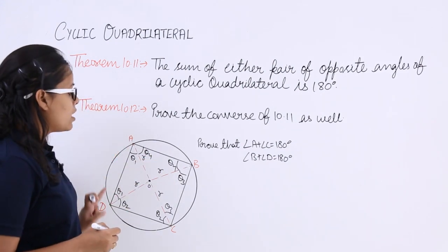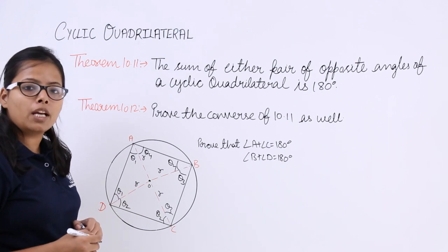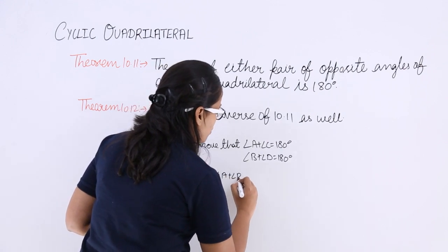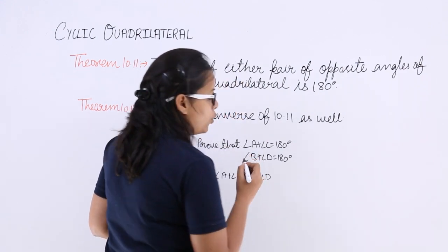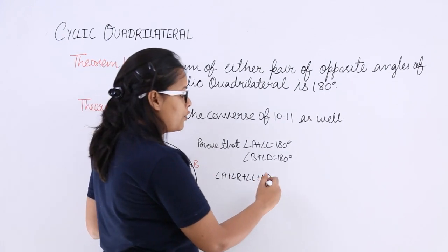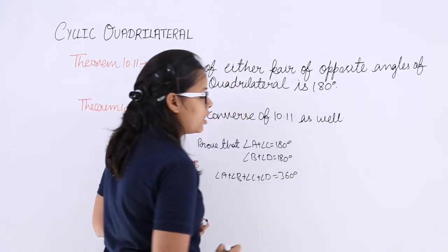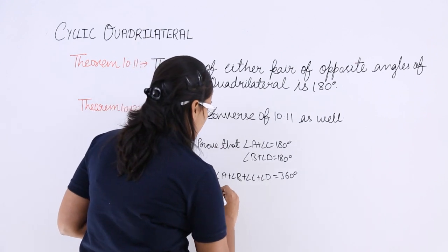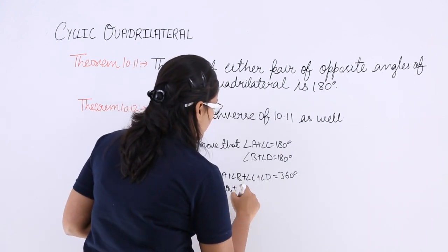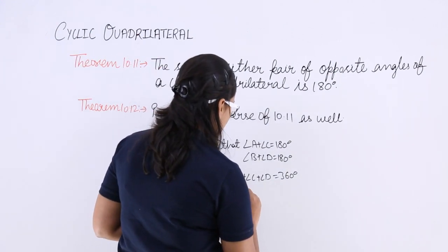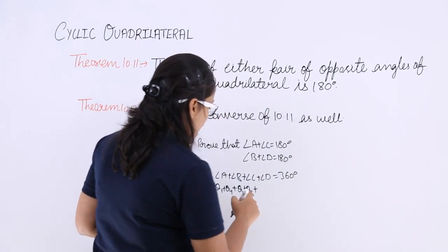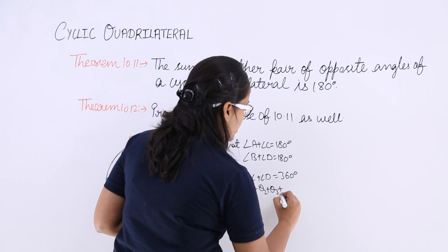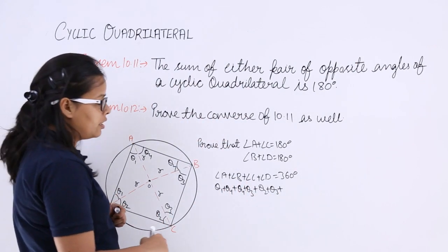Now, the sum of all the angles of this quadrilateral is equal to 360 degrees — you are already familiar with the quadrilateral angle sum property. So the angle at A is theta 1 plus theta 4, the angle at B is theta 4 plus theta 3, the angle at C is theta 2 plus theta 3, and the angle at D is theta 1 plus theta 2.